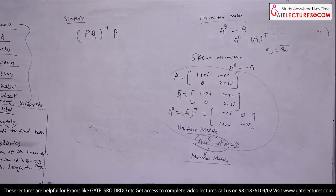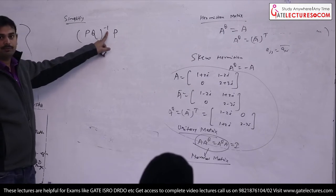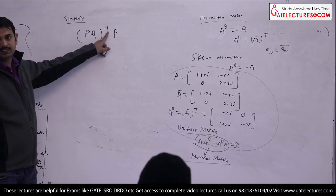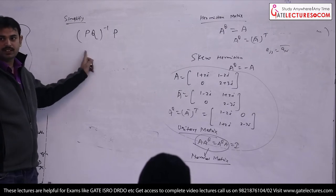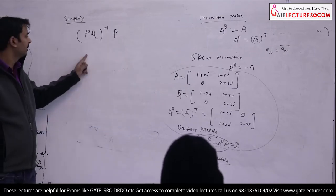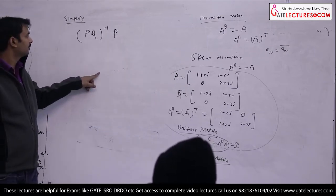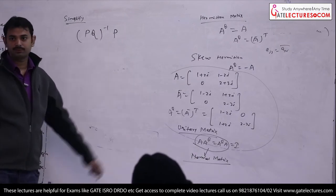You just need to check the properties. Here, the reversal rule applies the same way as transpose. This is Q inverse, P inverse — and P inverse P is nothing but the identity matrix, so the answer will be Q inverse.